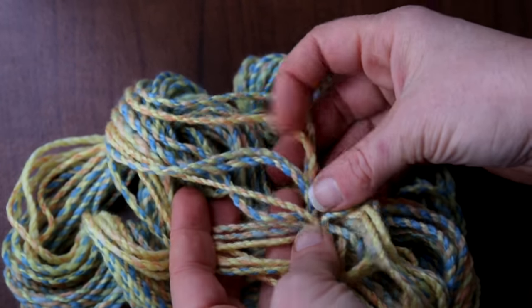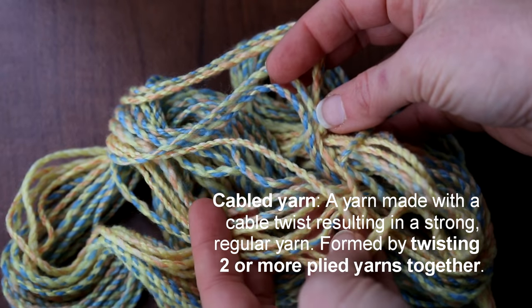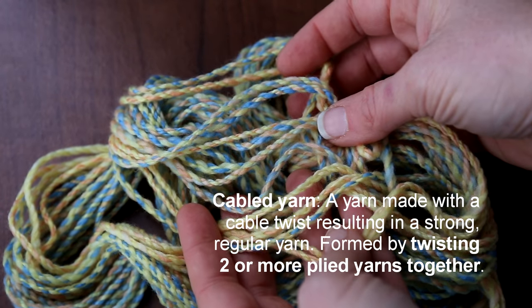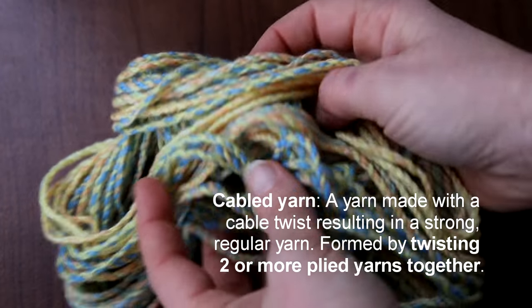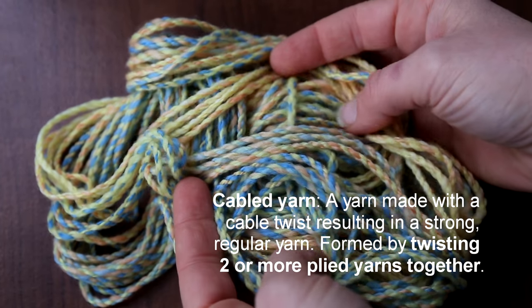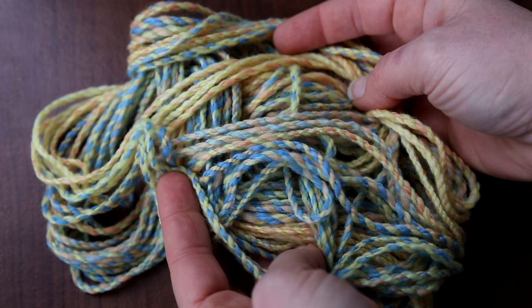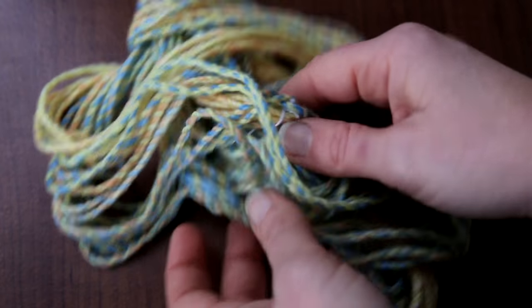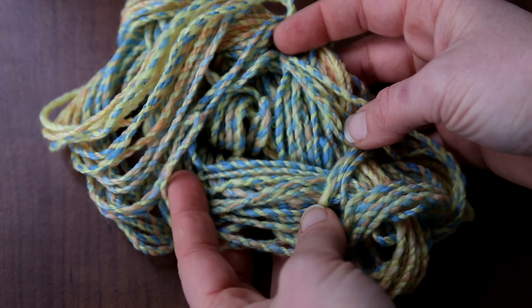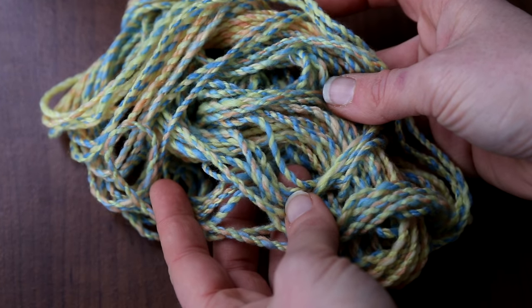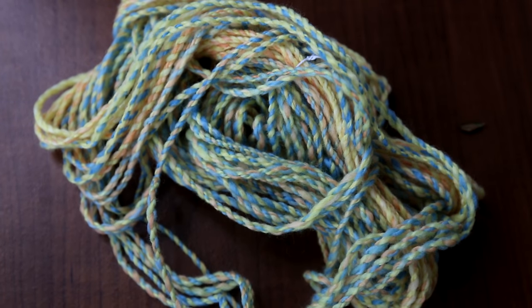For those who don't know what a cabled yarn is, I'm going to back up just a little bit. Cabled yarns are two plies that have been plied together again or back on themselves. So that means you're taking a two-ply yarn and you're literally plying it with another two-ply yarn.